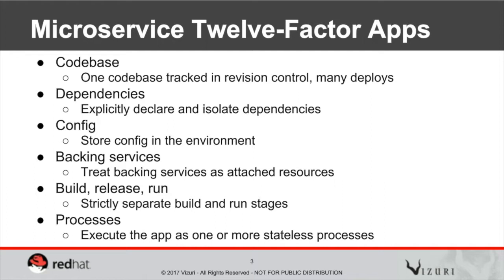You want to build, release, and run — this is that whole CICD pipeline we're talking about. Processes execute in a stateless process, which is a very important concept. You want to remain stateless as possible. State is maintained by back-end attached resources such as a database, while your actual microservices try to remain stateless as much as possible.